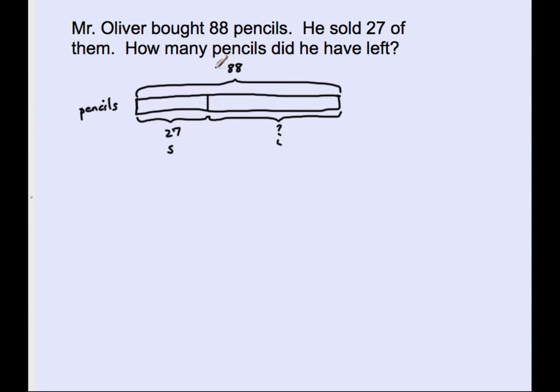So 88 is my total, so I will start there. 88 is my whole, so I'll start with 88 minus the part that I know, which is 27. And 88 minus 27 will give me the answer for this part right here.